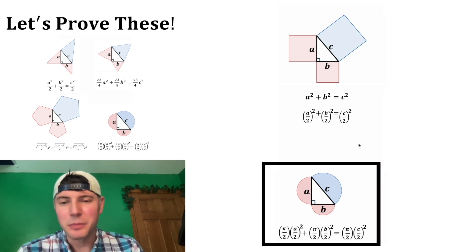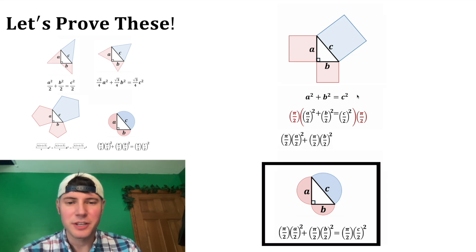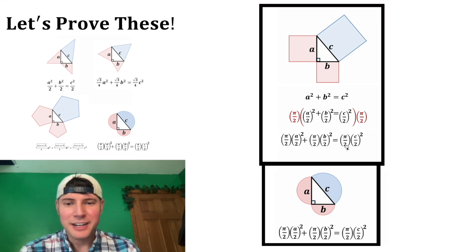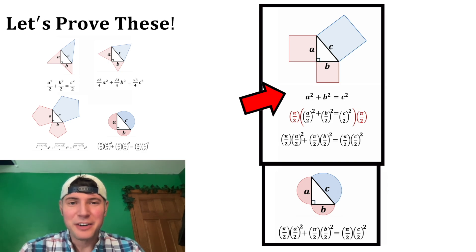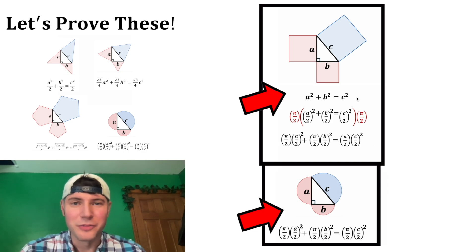And then for the next step, we can multiply both sides of the equation by pi over 2. This pi over 2 will distribute to both of these terms, and on this side it will distribute here. And now we have the equation of the semicircle Pythagorean theorem. So we went from the Pythagorean theorem that we know to this new fun version. And this will work for any similar figures. You end up multiplying both sides of the Pythagorean theorem by some constant. How exciting.